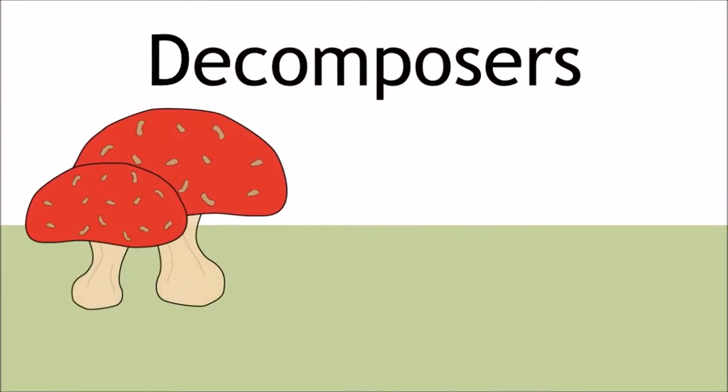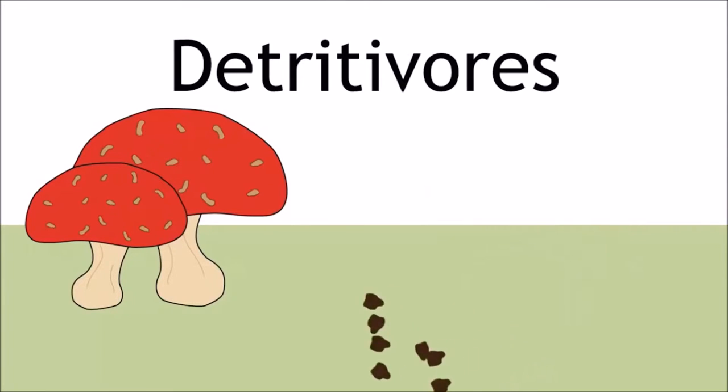Decomposers are also considered to occupy their own trophic level. They break down dead animal and plant matter, also known as detritivores.